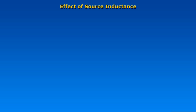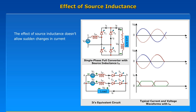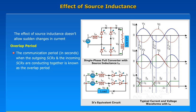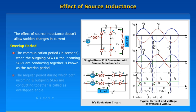Effect of source inductance. The effect of source inductance does not allow sudden changes in current. Overlap period. The commutation period when the outgoing SCRs and the incoming SCRs are conducting together is known as the overlap period.